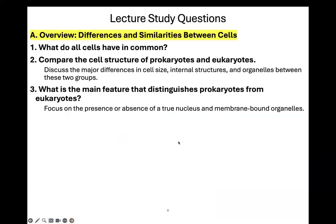So by the end of this short lesson, what I hope you got out of it is the commonalities between all cells: all cells have a plasma membrane, all cells have DNA, all cells have ribosomes, and all cells have cytoplasm. The main differences are that prokaryotic cells do not have a nucleus and do not have organelles, while eukaryotic cells have a nucleus and have organelles. In the next few sections, we're going to focus on the details of prokaryotic cells and eukaryotic cells in more detail.